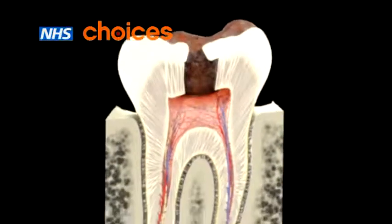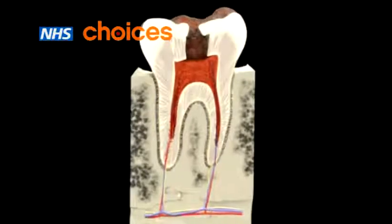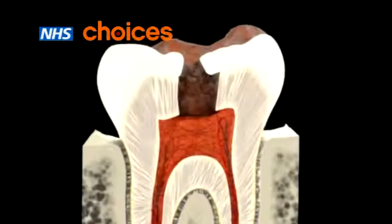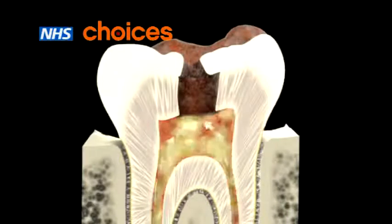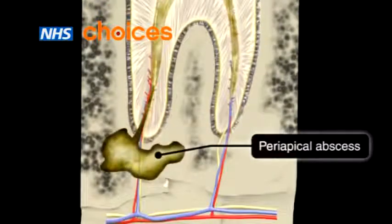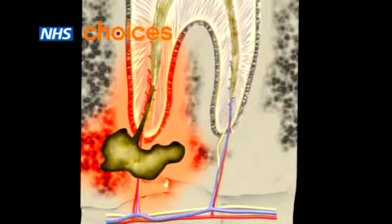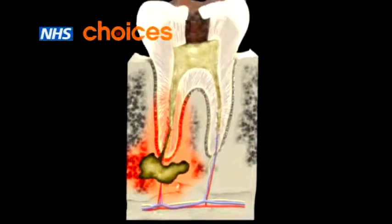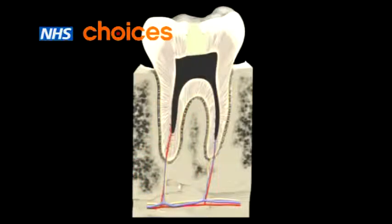The holes allow bacteria to invade the tooth and destroy the tooth pulp. White blood cells then pour into the affected area and pus forms, producing a periapical abscess — the most common type of dental abscess. A periapical abscess is treated with antibiotics and a permanent root filling is put in at a later date, to prevent further infection.